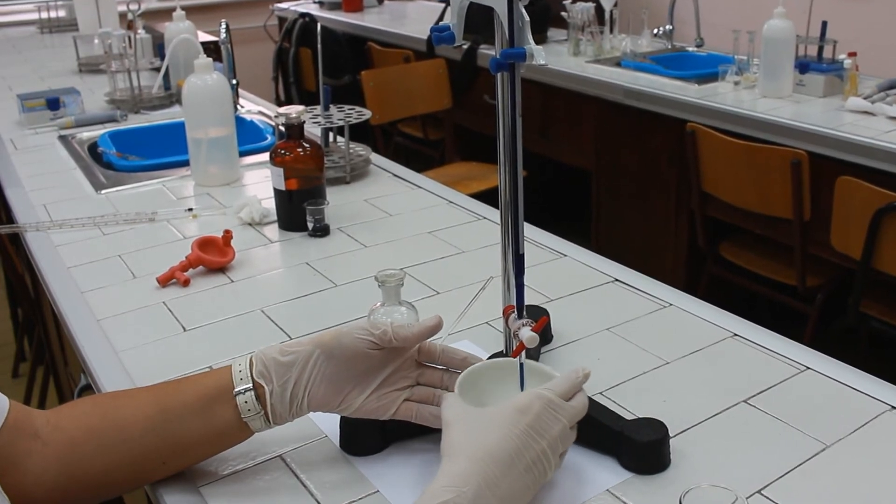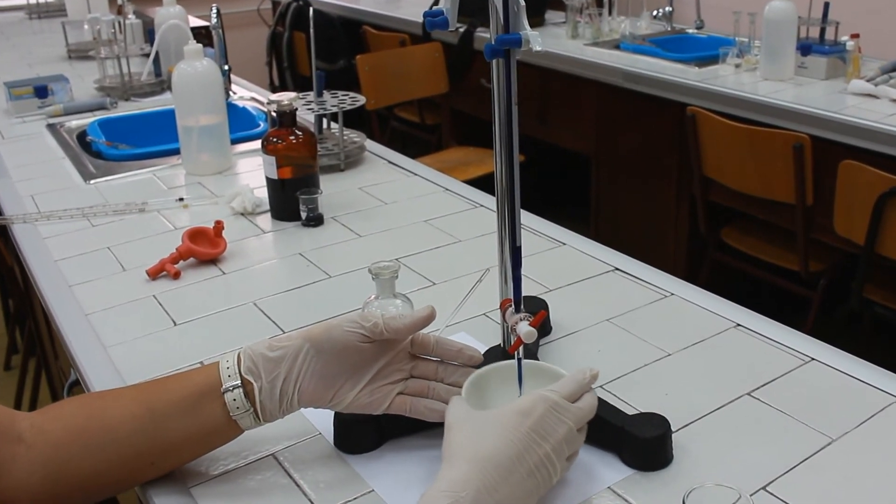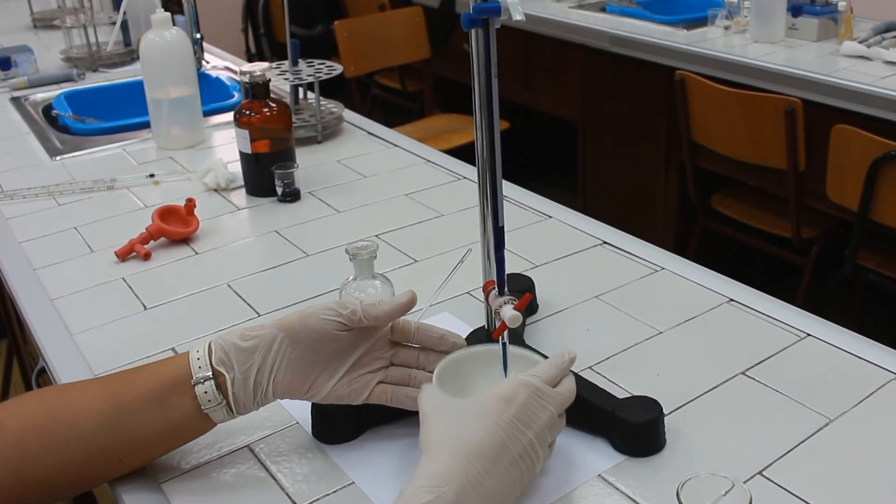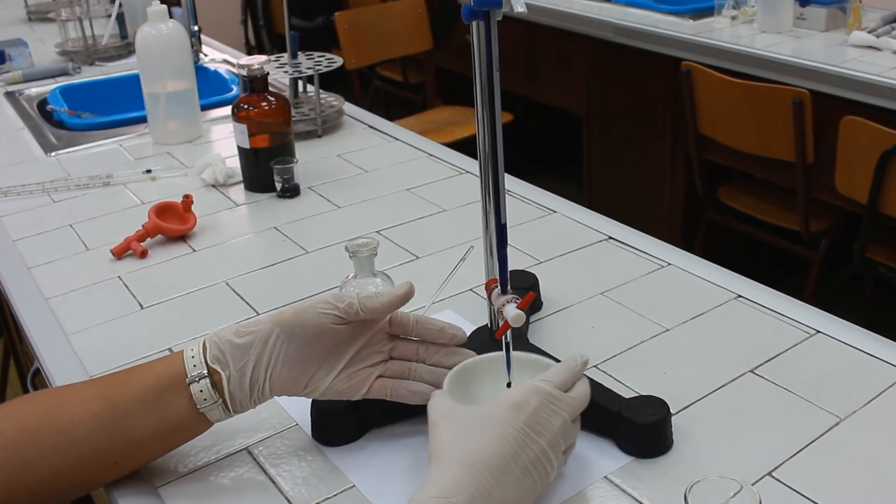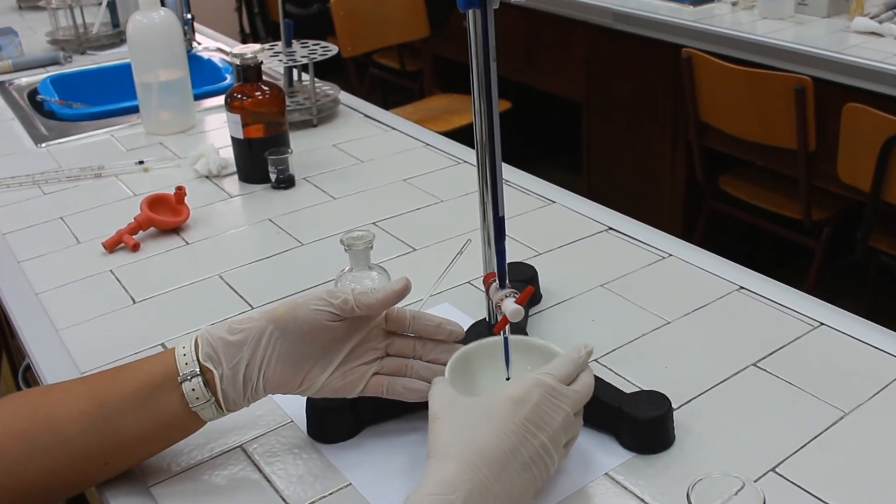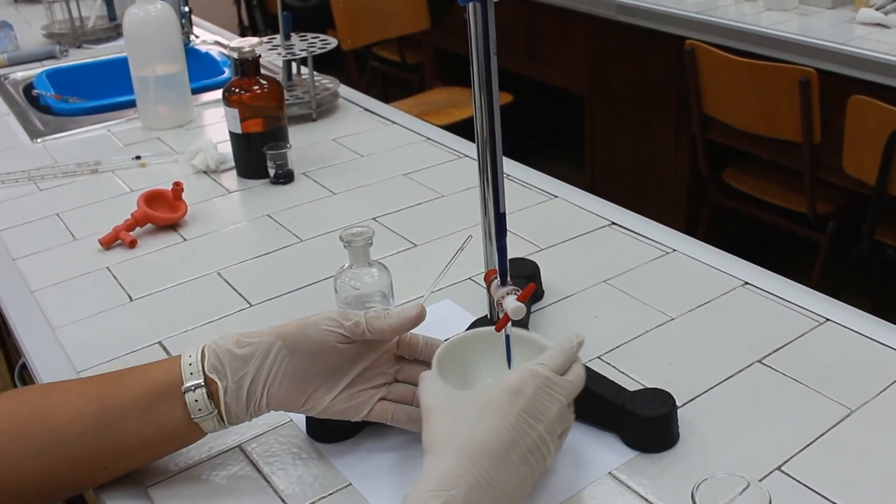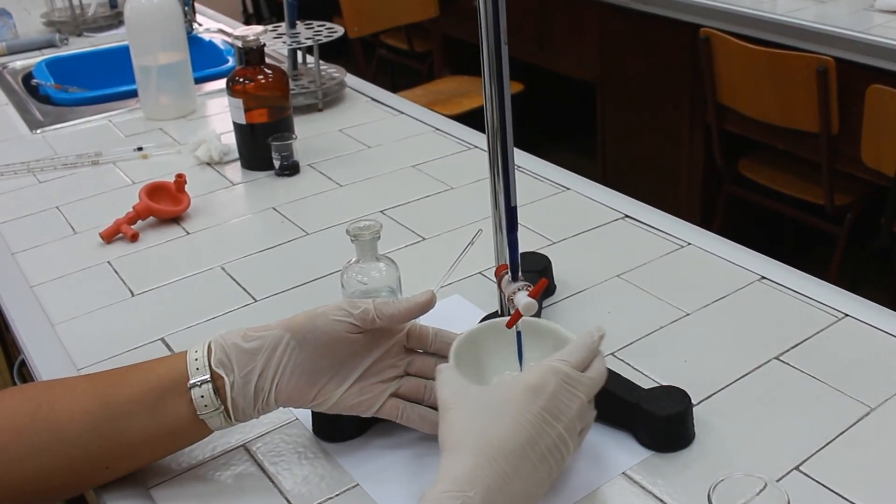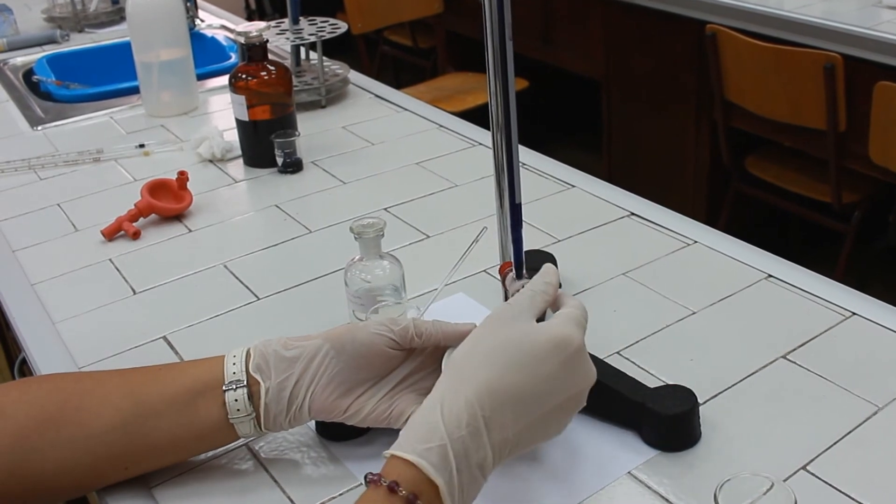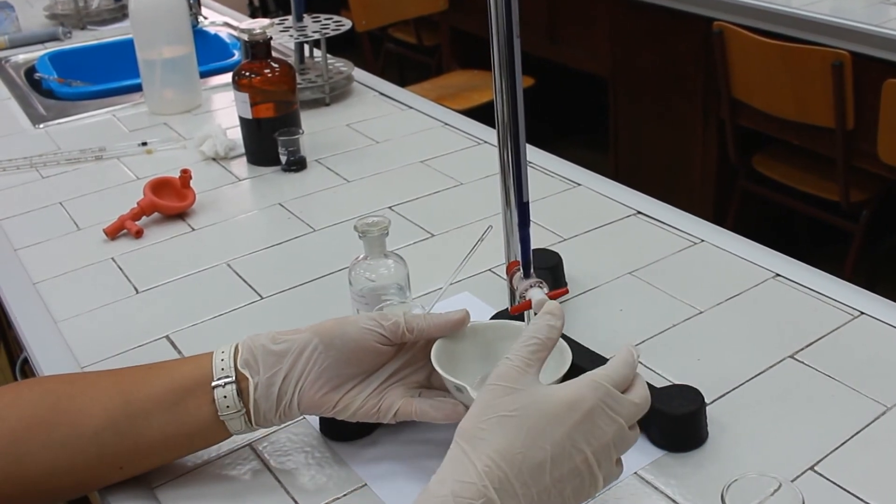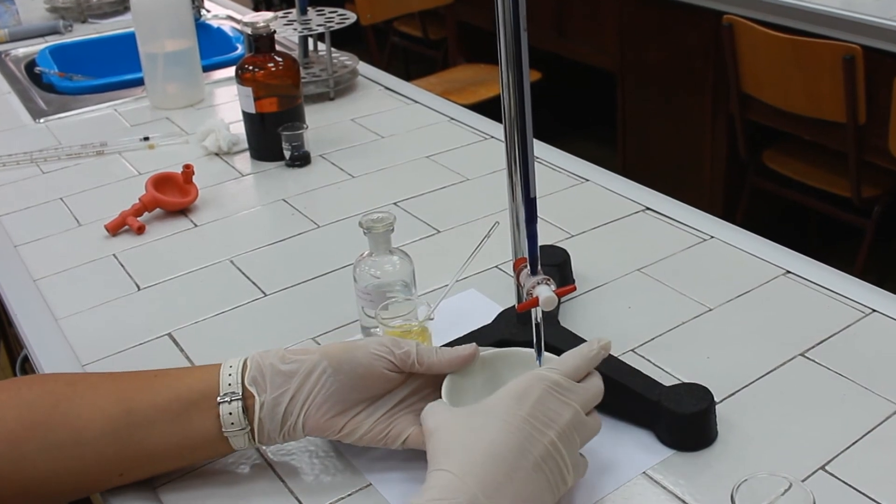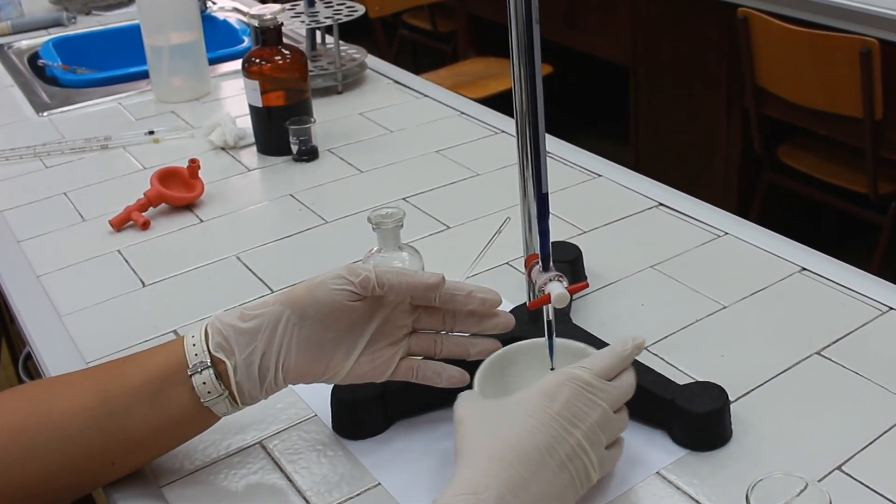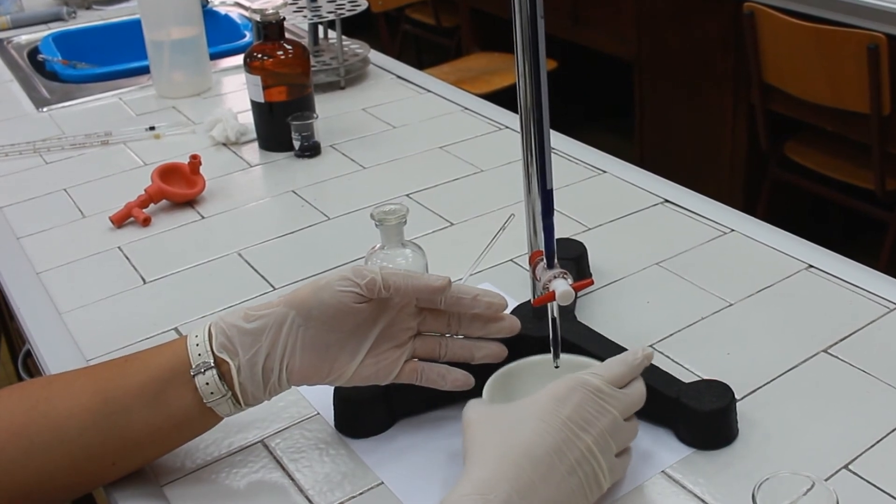The blue drop reacts with the vitamin C and becomes colorless because dPiP is reduced during this redox reaction. But at the end of titration, the blue color drop of dPiP is going to change to red and the color is going to remain stable for at least 30 seconds.